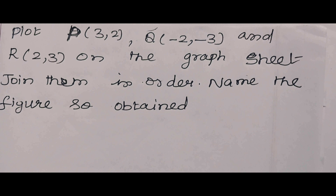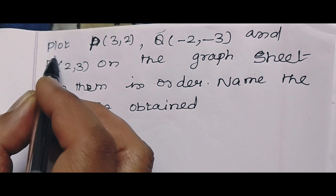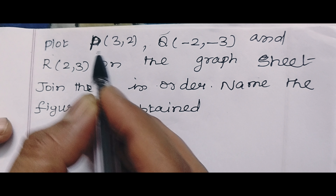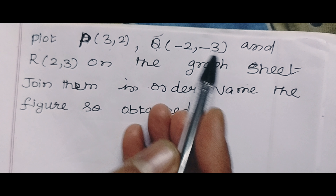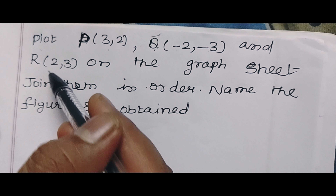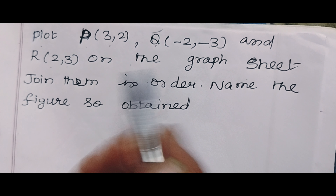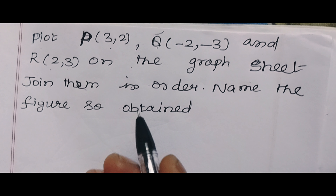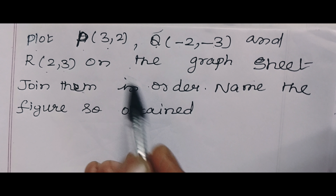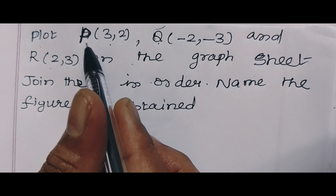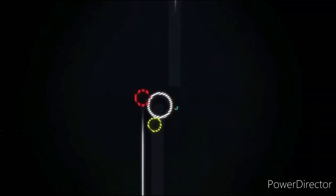Here I am going to mark P(3,2), Q(-2,-3) and R(2,3) on the graph sheet. Join them in order and name the figure so obtained. We are going to plot these three points in the graph sheet.